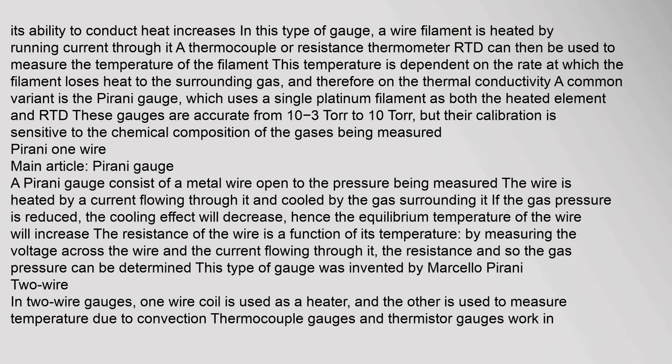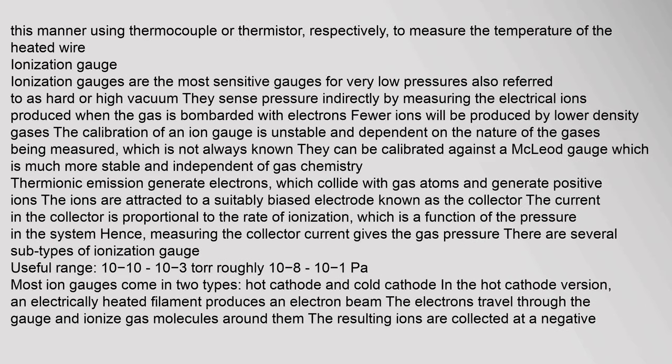Thermal conductivity gauges work on the principle that as a real gas increases in density (indicating increased pressure), its ability to conduct heat increases. In this type of gauge, a wire filament is heated by running current through it; a thermocouple or resistance thermometer (RTD) measures the temperature of the filament. This temperature depends on the rate at which the filament loses heat to the surrounding gas and therefore on the thermal conductivity. A common variant is the Pirani gauge, which uses a single platinum filament as both the heated element and RTD.